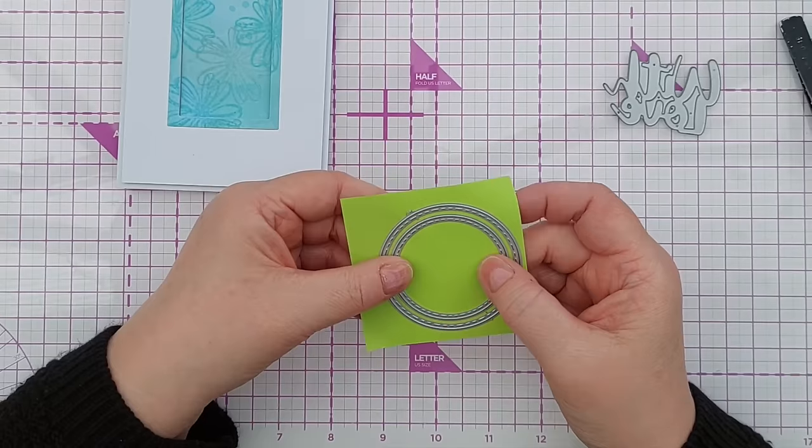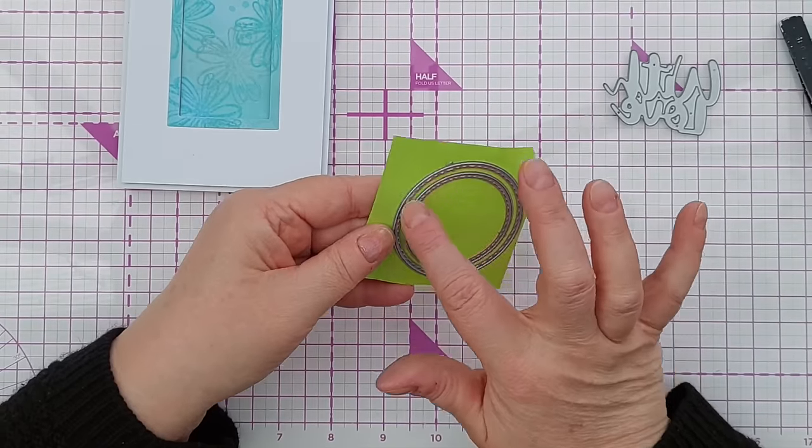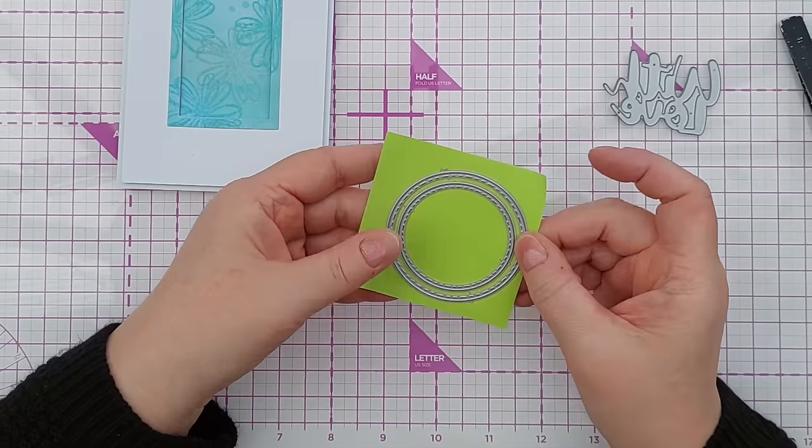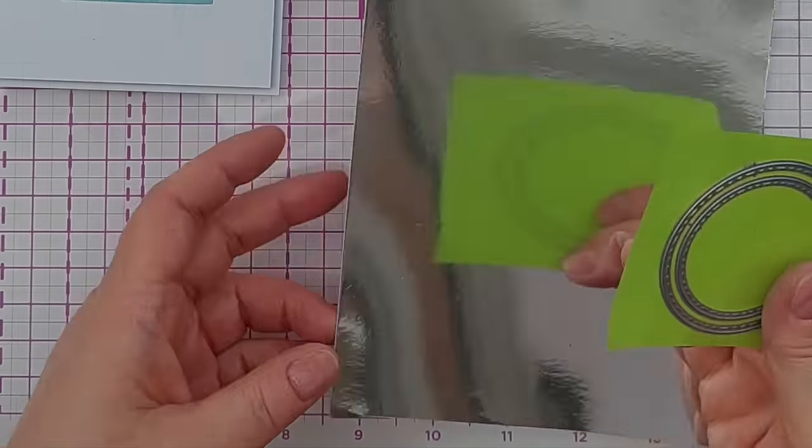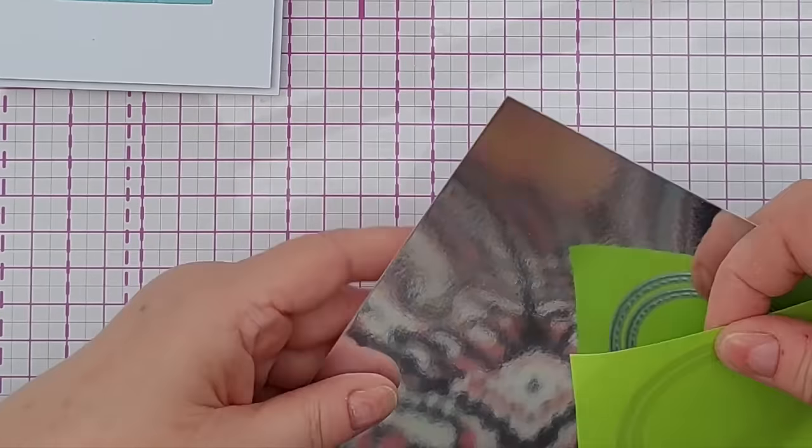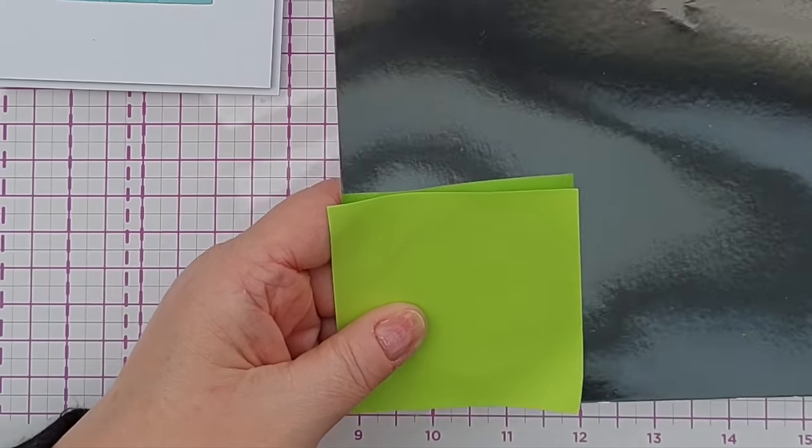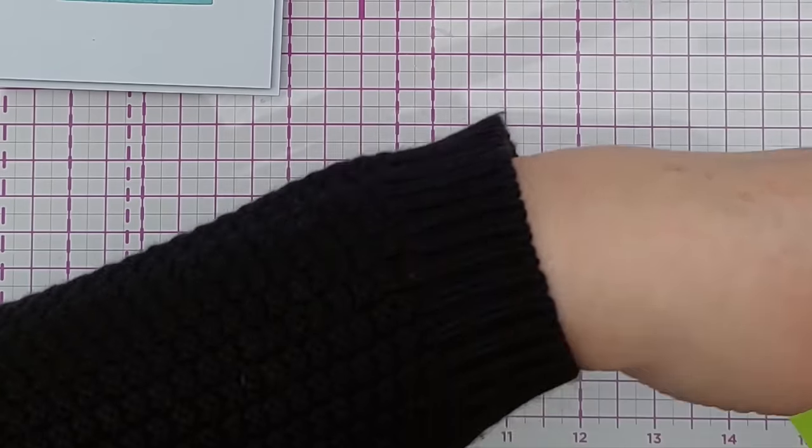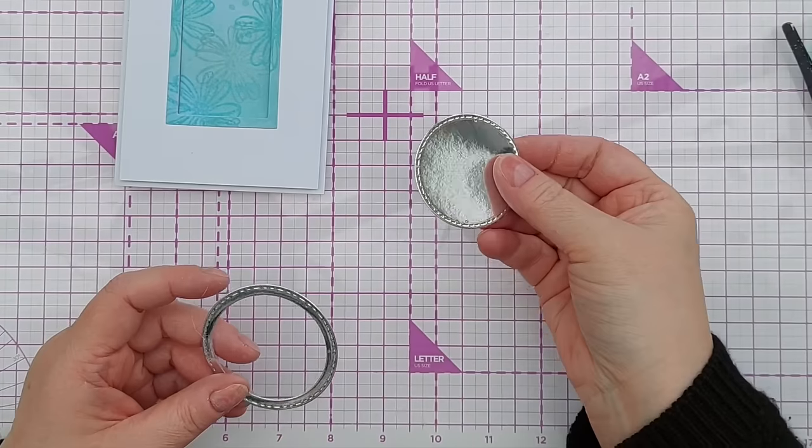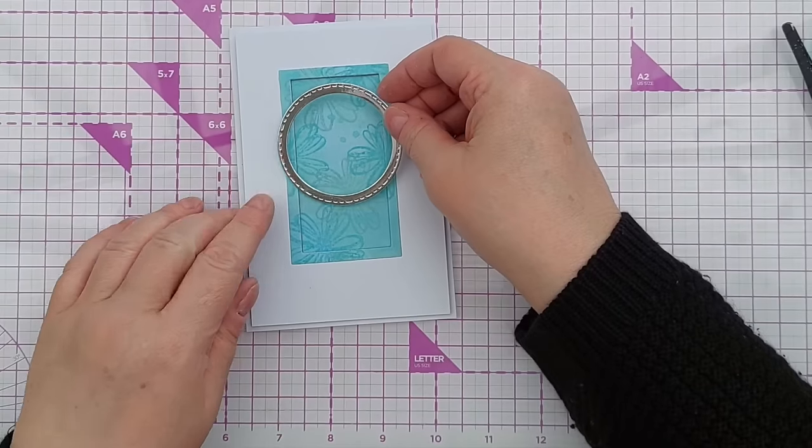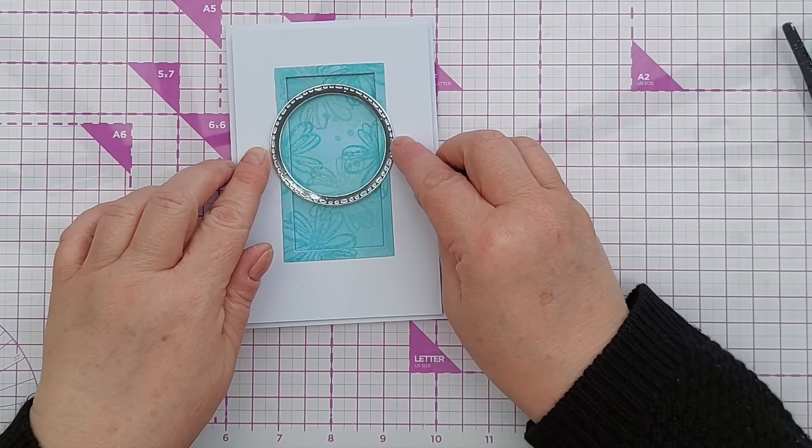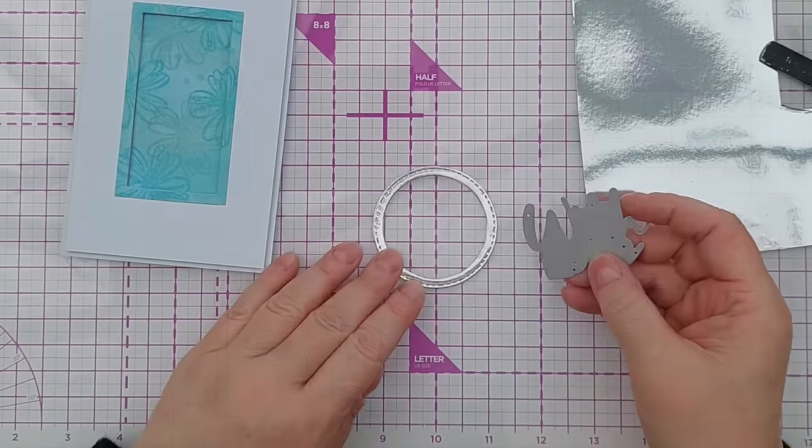For my original card I did gold, but I'm going to do silver for this one—I think it goes nicely with the blue tones. I can save that one for later, but now I have my stitched frame there.